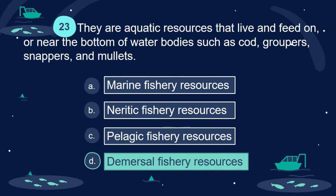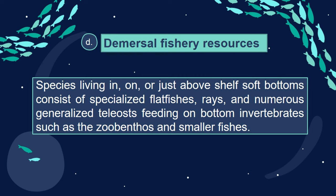Answer: D. Demersal fishery resources. Species living in, on, or just above shelf soft bottoms consist of specialized flat fishes, rays, and numerous generalized teleosts feeding on bottom invertebrates such as the zoobenthos and smaller fishes.